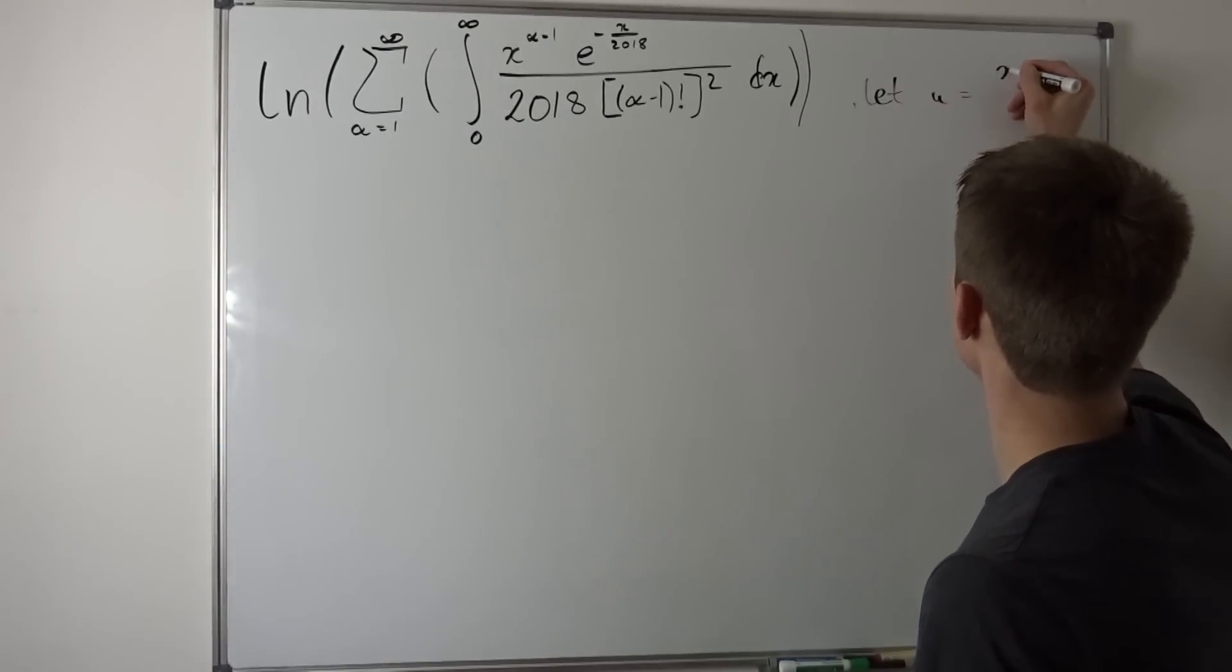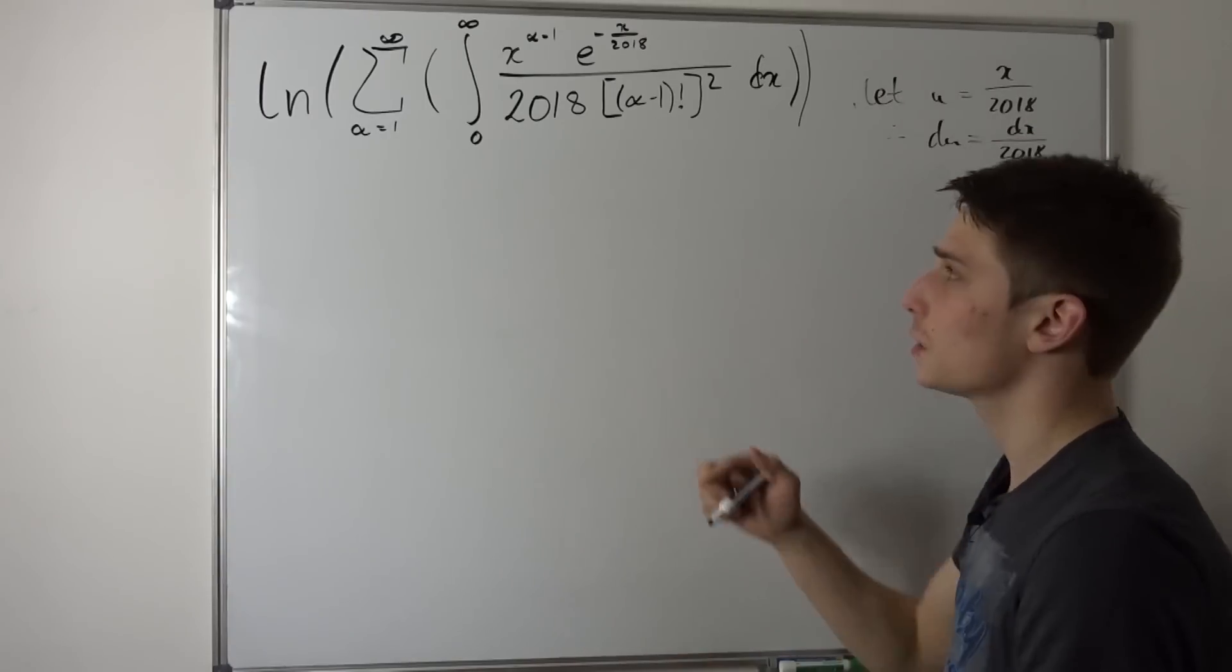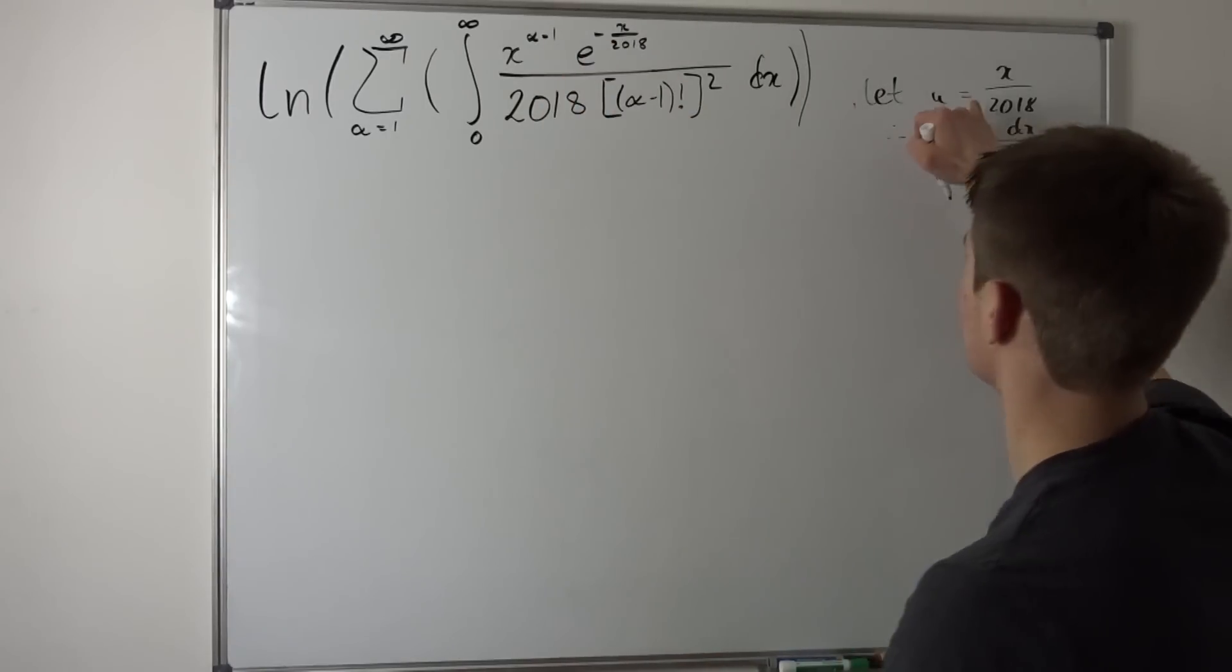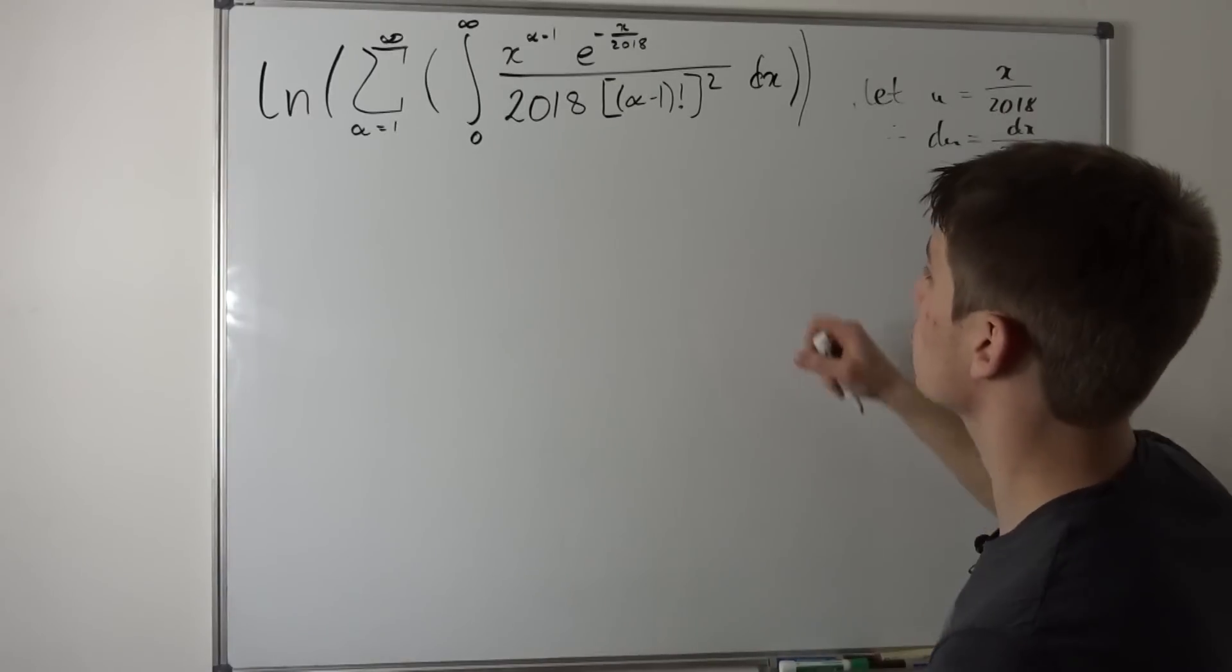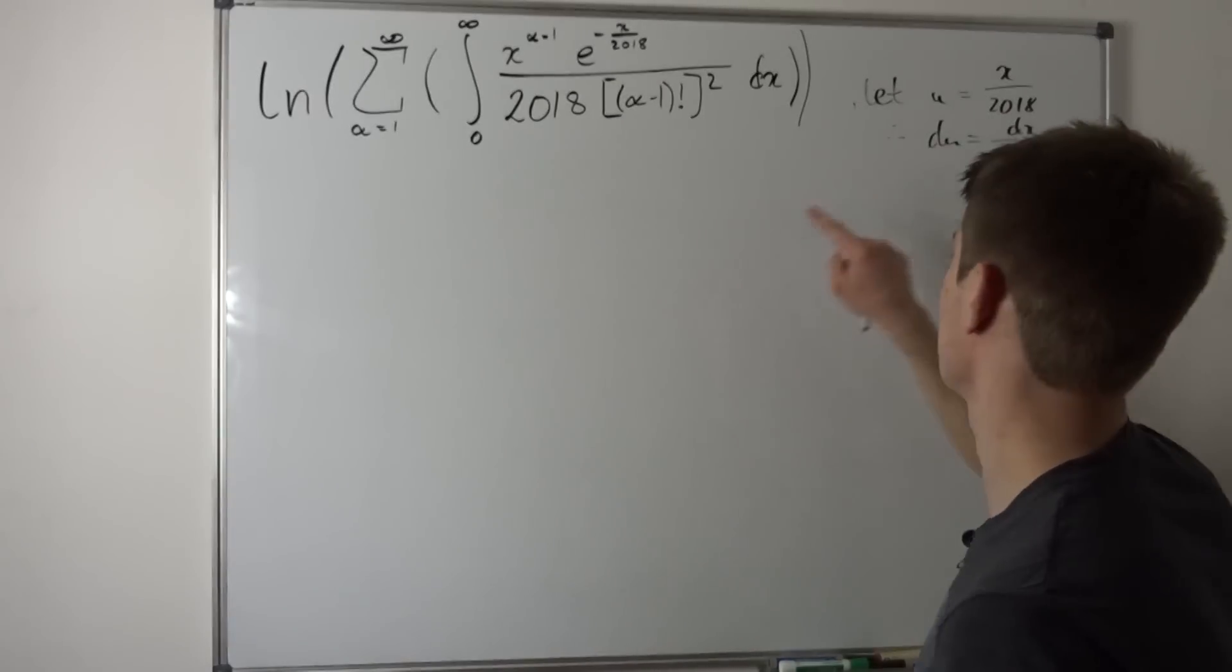Let's set u equal to x over 2018. When we differentiate that we end up with du equals dx over 2018. So that's nice. And if we want to isolate x in this case, that means that x is nothing else than u times 2018.